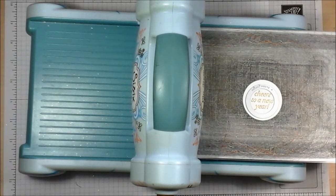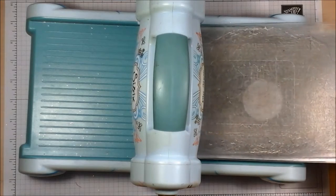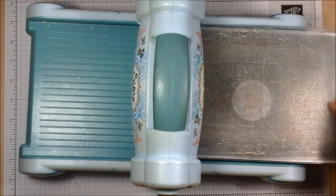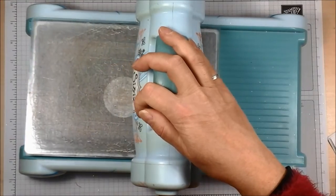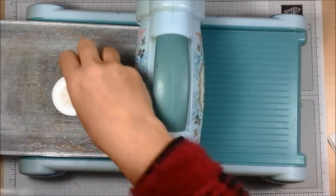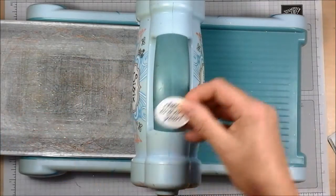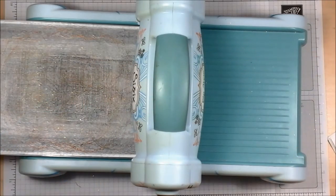Okay, so now I have the smallest, the number one of the circled dies in the stitched shapes framelits. So I'm going to run that through and that gives me my sentiment again with a nice little bit of stitching on it.